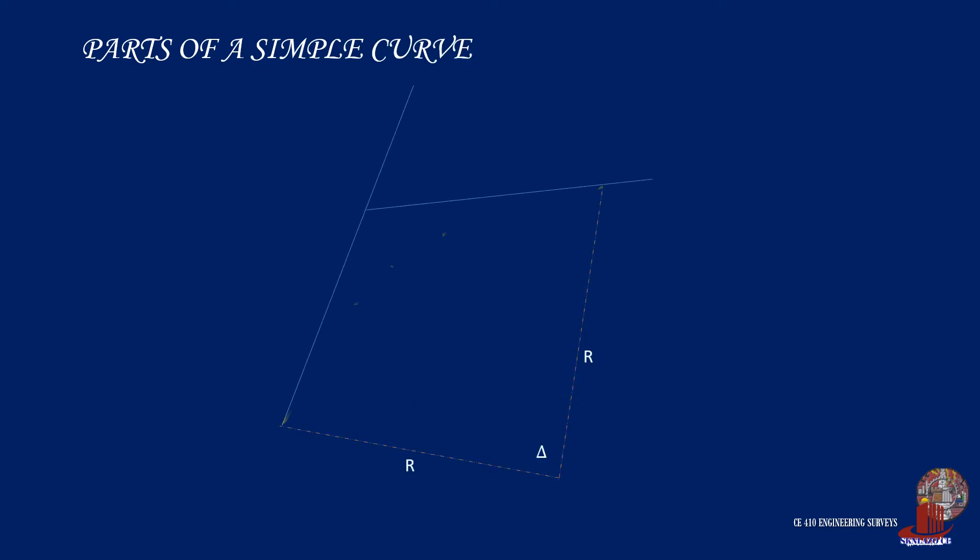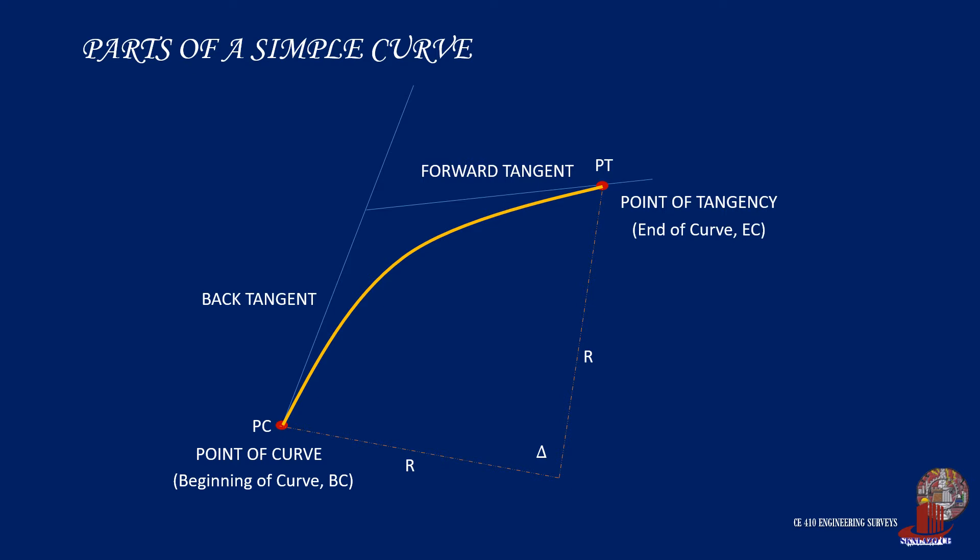A simple curve is formed when two tangents or straights intersect. The point where the back tangent joins the simple curve is called the point of curve or PC. Some references refer to it as the beginning of curve or BC. The point where the curve ends and meets the forward tangent is called point of tangency or PT. Some references use end of curve or EC.